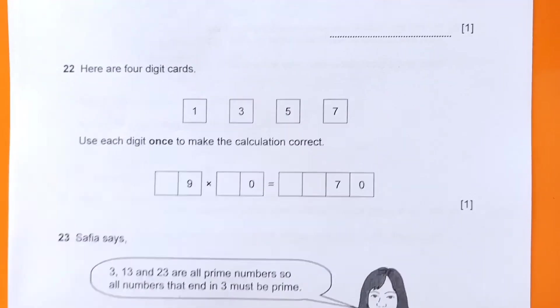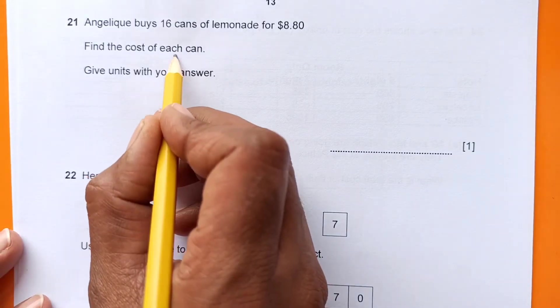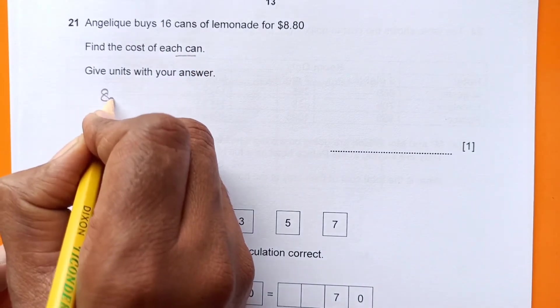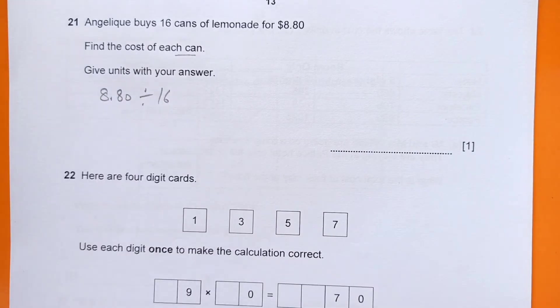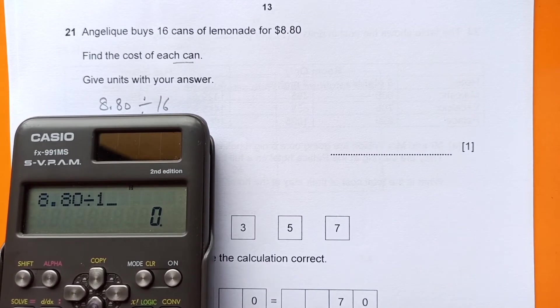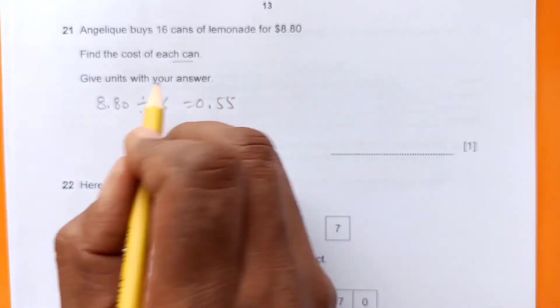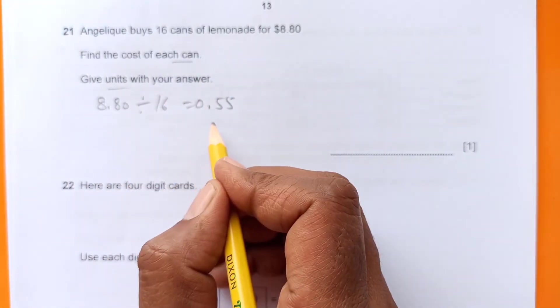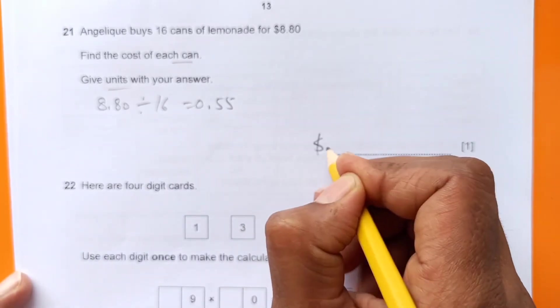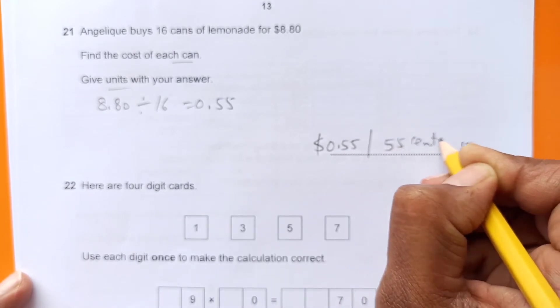Number 21: Angelica buys 16 cans of lemonade for $8.80. Find the cost of each can. So it's just a division - $8.80 divided by 16 equals $0.55. Give units with your answer, so we can write it as $0.55 or 55 cents.